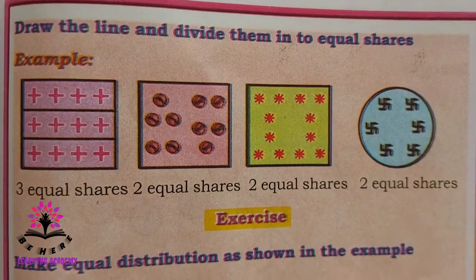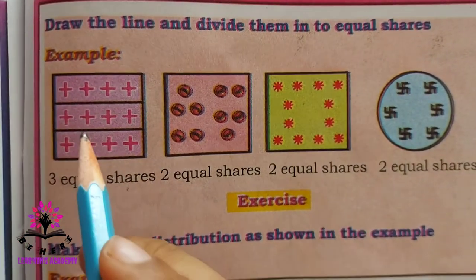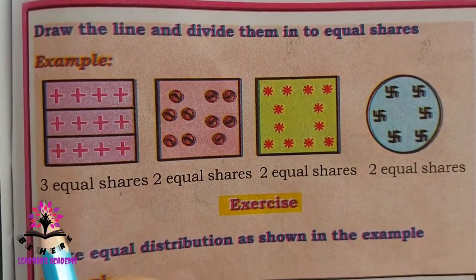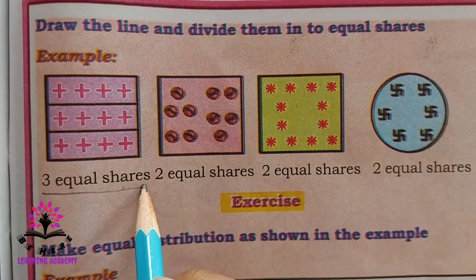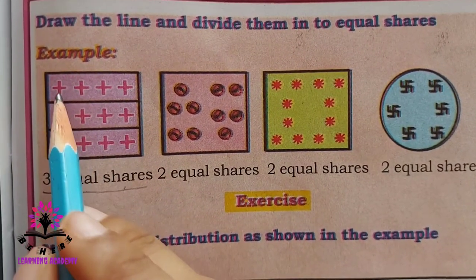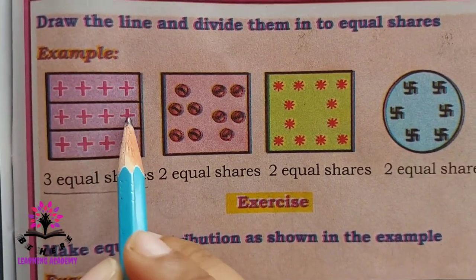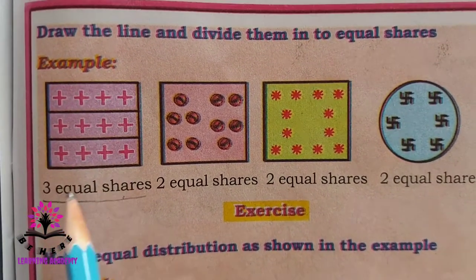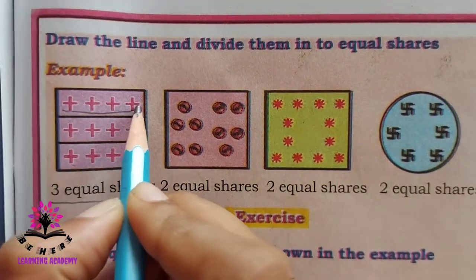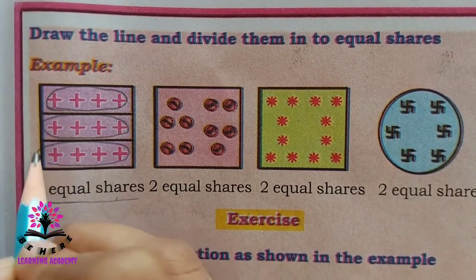Draw the line and divide them into equal shares. See the first one — here plus signs are given. You have to make three equal shares. In the first section there are four, here also four, and the third section also has four. So when you make three equal shares, this becomes one, two and three — three equal shares.